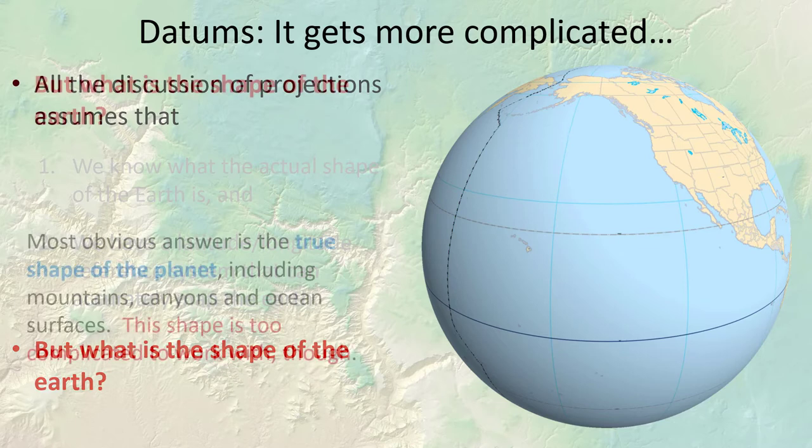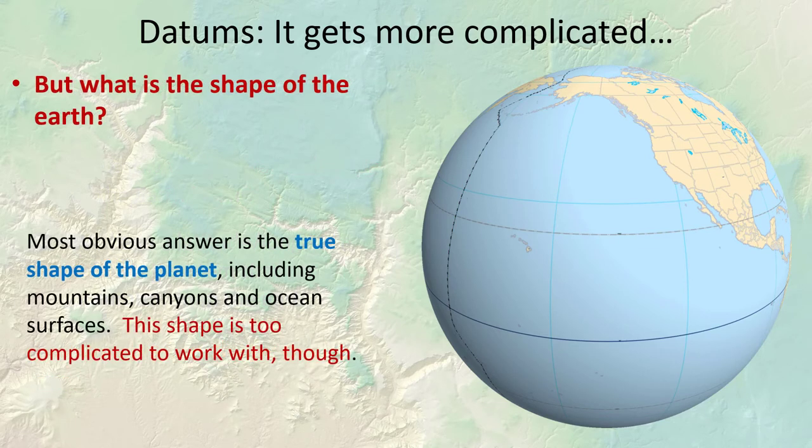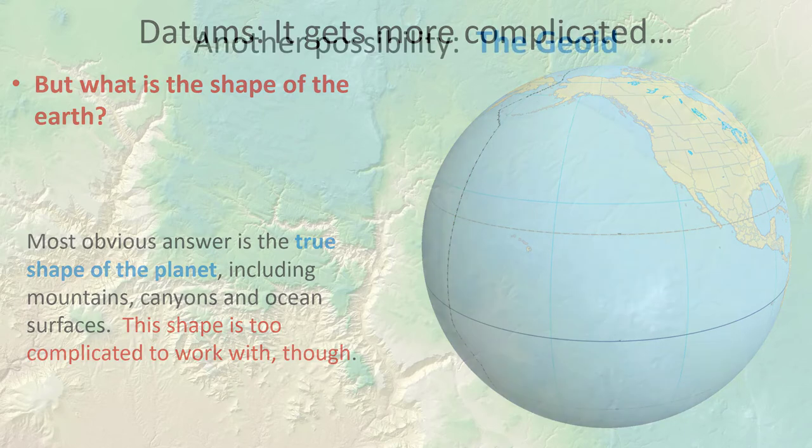The most obvious answer would be the actual true shape of the planet, which is measurable and includes mountains, canyons, and ocean surfaces. The problem is it's just too complicated to work with — it would bomb your computer if it tried to reproject that entire shape every time you changed the map frame. Plus it's changing all the time: every earthquake changes the shape a little, tectonic plates rotate and shift, and erosion changes the surface. The true surface of the planet is just not a steady and constant thing.